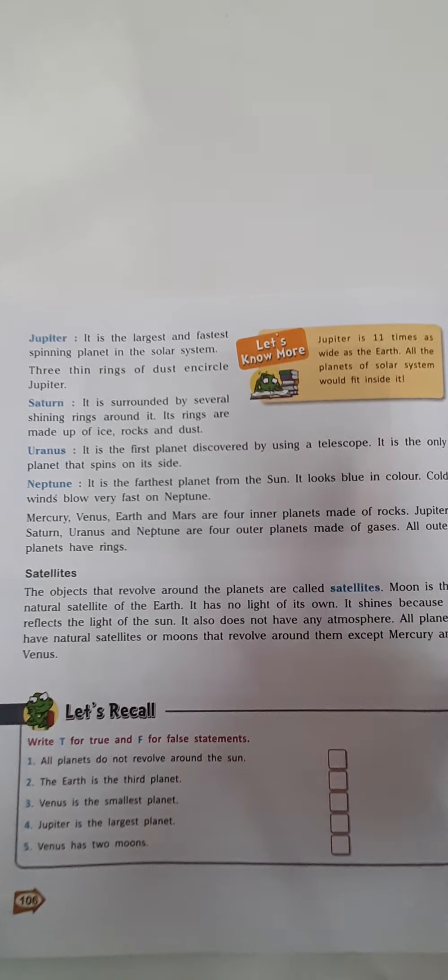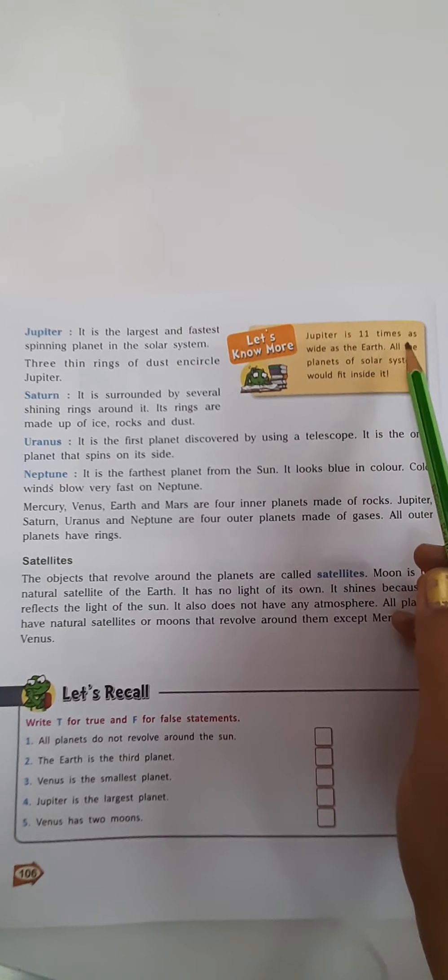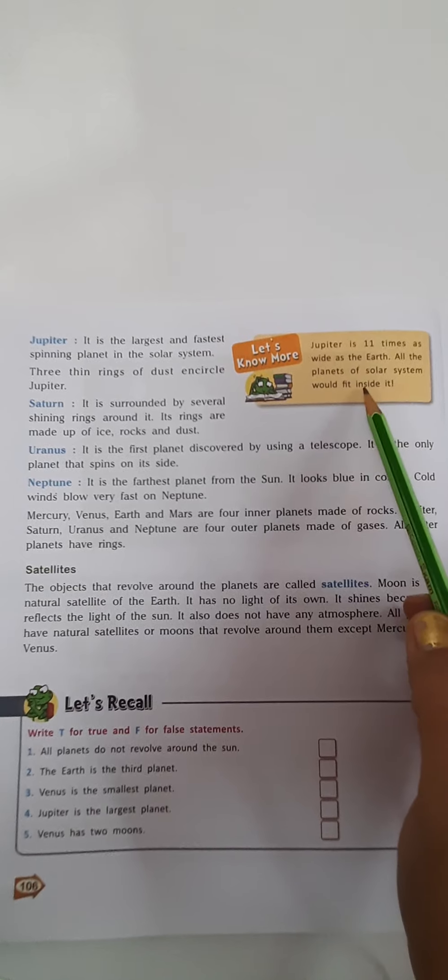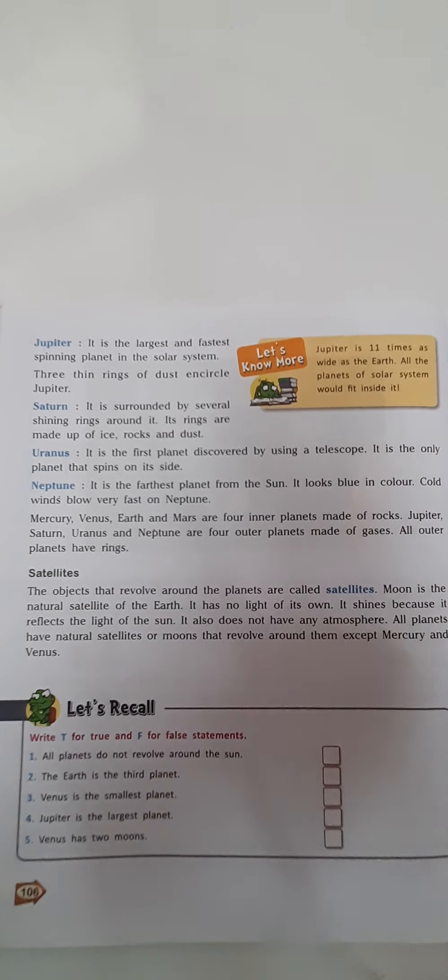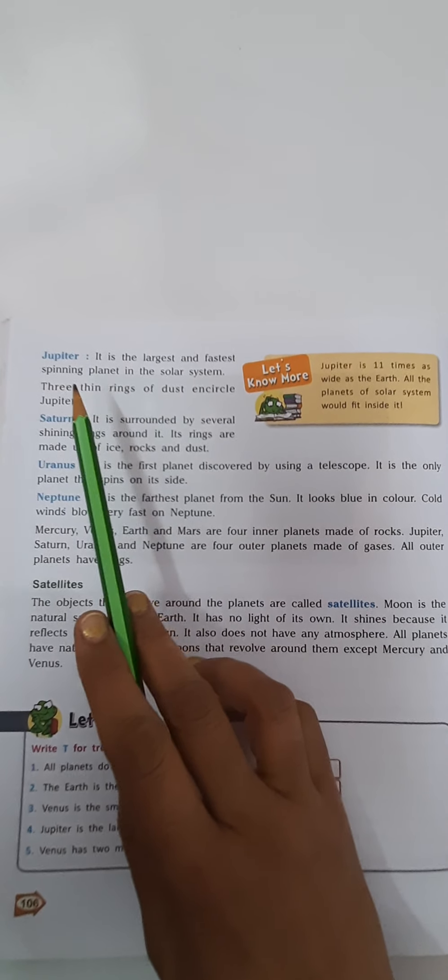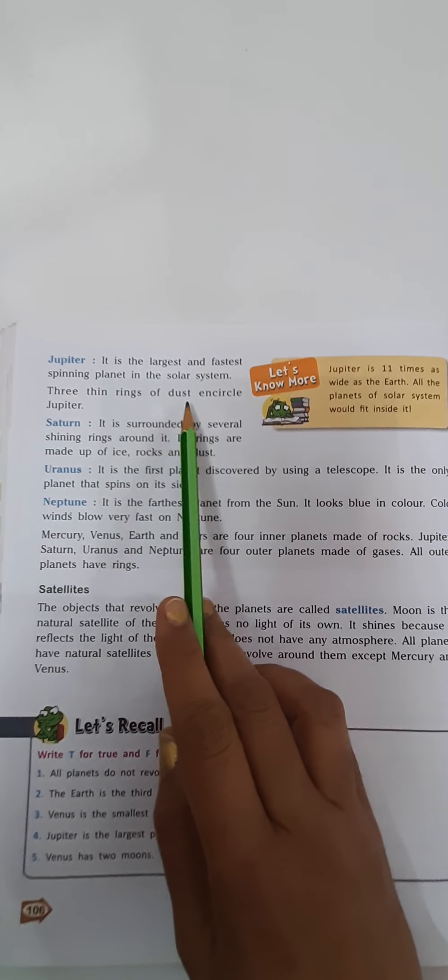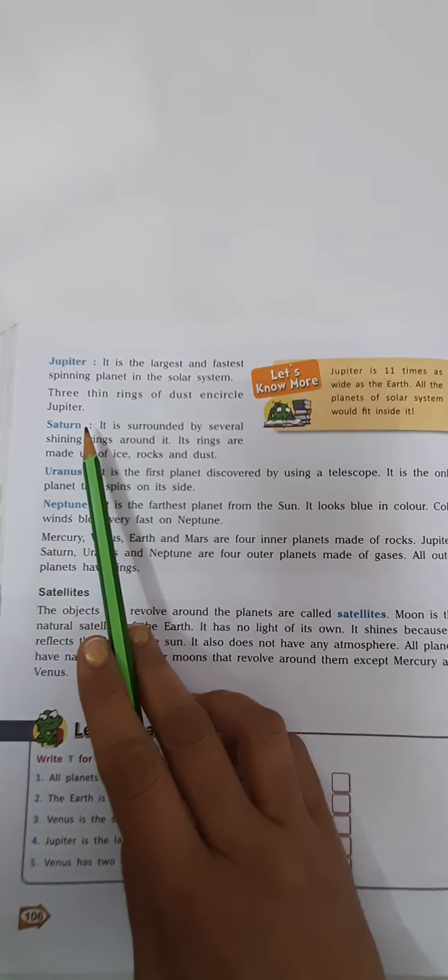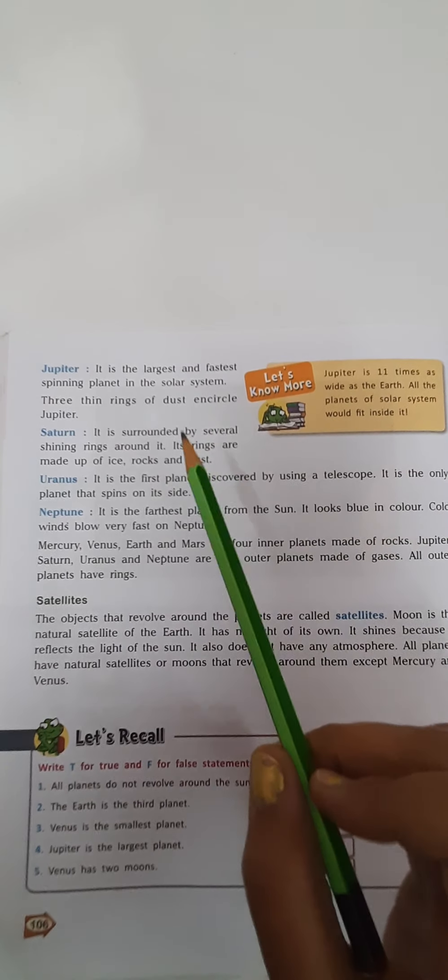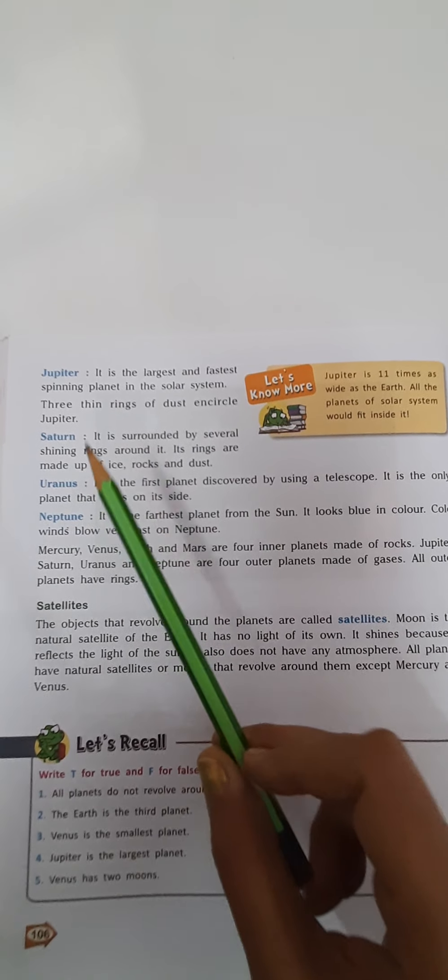Jupiter is the next planet after Mars. Jupiter is 11 times as wide as Earth. All the planets of the solar system would fit inside it. It is a huge planet. It is the largest and fastest spinning planet in the solar system. Three thin rings of dust encircle Jupiter. These rings are not very clear as Saturn, but thin rings of dust are present around Jupiter.